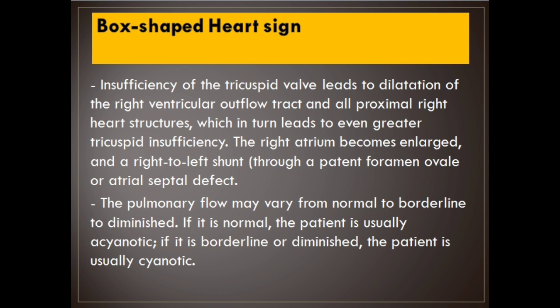The right atrium becomes enlarged, and a right-to-left shunt through a patent foramen ovale or atrial septal defect may develop. The pulmonary flow may vary from normal to borderline to diminished. If it is normal, the patient is usually acyanotic; if it is borderline or diminished, the patient is usually cyanotic.